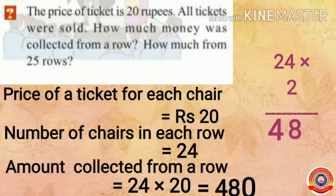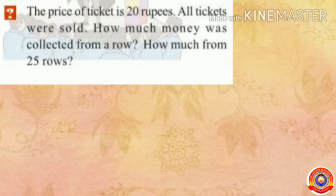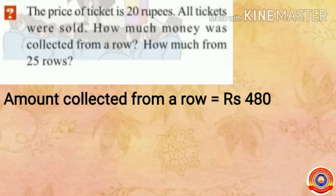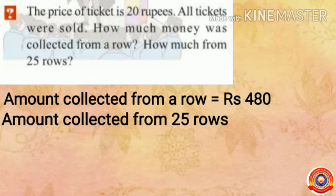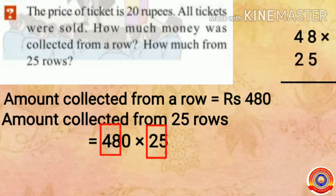The amount collected from a row is equal to 480 rupees. Next question: how much amount was collected from 25 rows? The amount collected from one row is 480 rupees, so to find the amount collected from 25 rows, multiply 480 and 25.